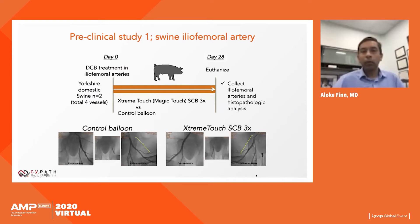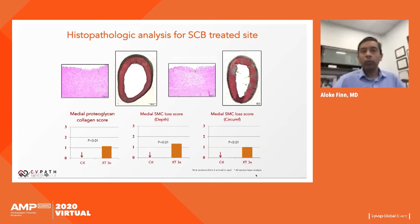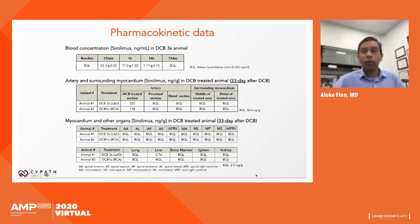In a preclinical study in the porcine iliofemoral model comparing the Magic Touch balloon versus a control balloon at 3× dosing, we found signs of drug effect — proteoglycans, muscle cell loss in both depth and circumference — confirming successful drug transfer to the arterial wall. Pharmacokinetic data showed blood sirolimus concentrations fell below detectable levels at 33 days, while sirolimus was still found in the treated artery at 33 days in both animals examined. Proximal and distal sections had no detectable sirolimus.